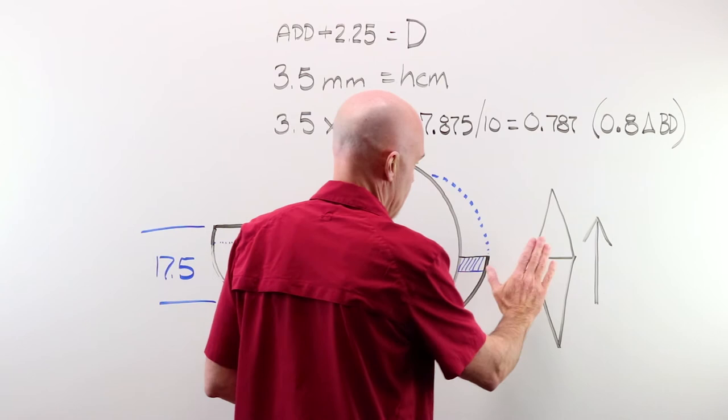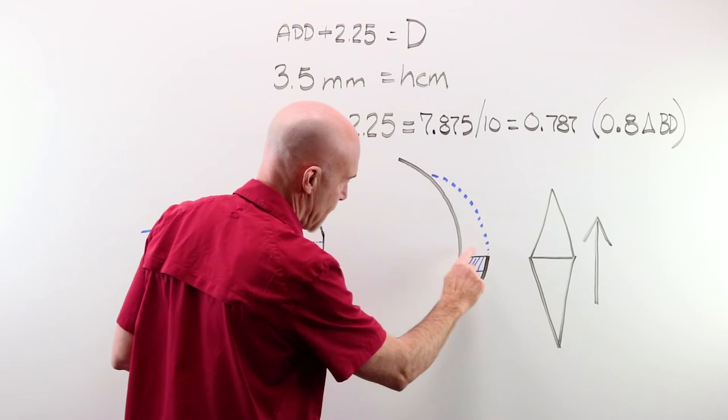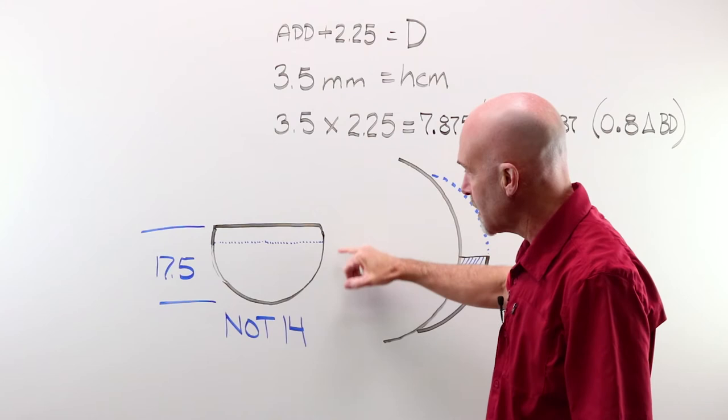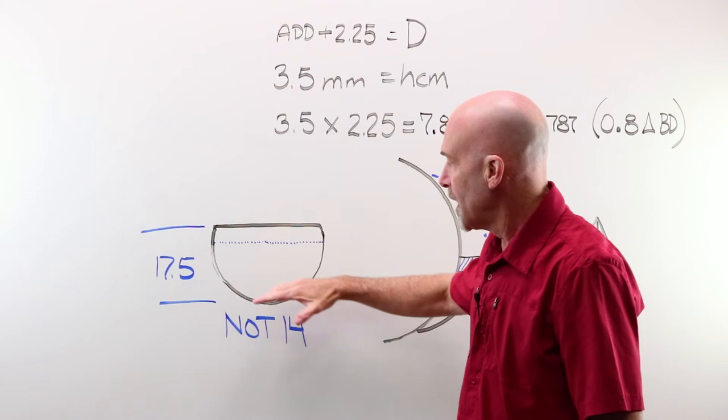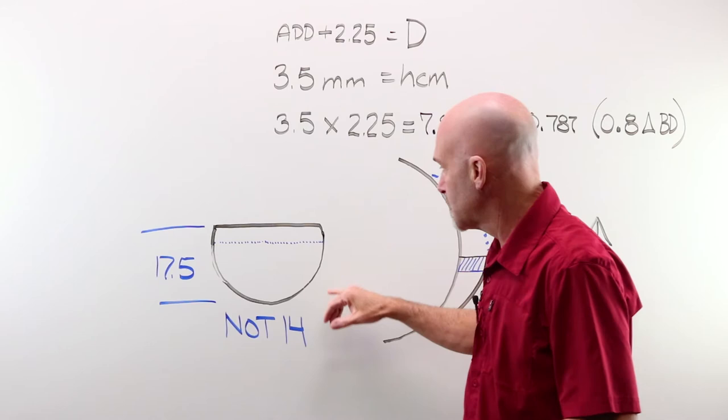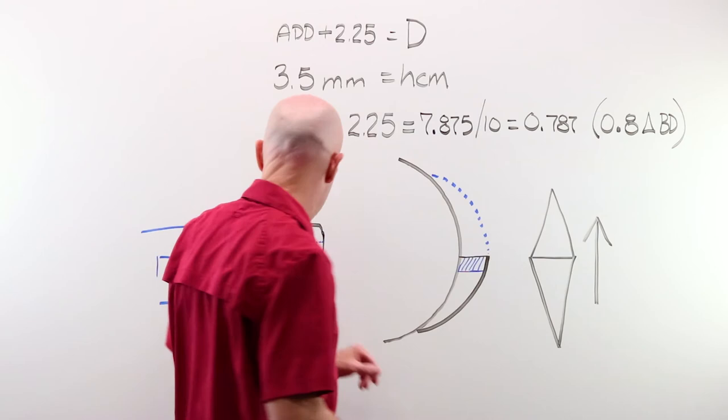Because it's a simple plus lens, if we took it and we brought it out into here, and we took off this top, we have our Straight Top bifocal segment here. Remember when we looked at the height of that Straight Top 28, we said it was 17.5. Half of 28 in a circle would be 14. That extra 3.5 millimeters up is really important in working this through. Because if it was at 14, you'd be at the OC.